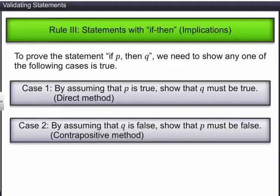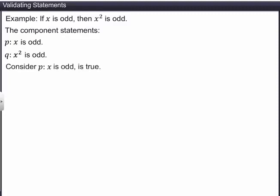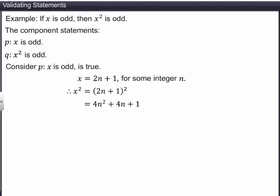Let's prove the statement: 'If X is odd, then X squared is odd.' The component statements are P — 'X is odd', and Q — 'X squared is odd.' To validate this, let's assume statement P is true. Let X = 2N + 1 for some integer N, by the definition of an odd number. Therefore, X squared equals (2N + 1)², which simplifies to 2(2N² + 2N) + 1. This is also an odd number, showing that X squared is odd. Hence the given statement is proved.